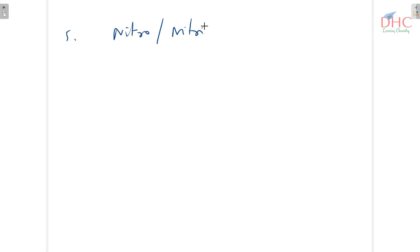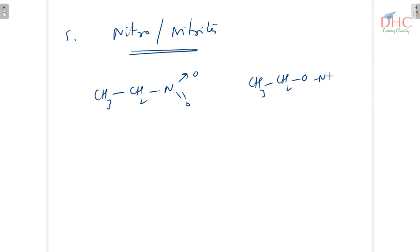The fifth category is nitro compounds and nitrites. CH3-CH2-NO2 is a nitro compound, where nitrogen is directly bonded to carbon. CH3-CH2-O-NO is a nitrite, where oxygen is directly bonded to carbon. They have the same molecular formula but different functional groups attached to the carbon chain. We call these functional isomers.